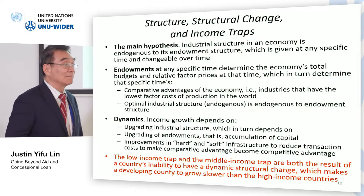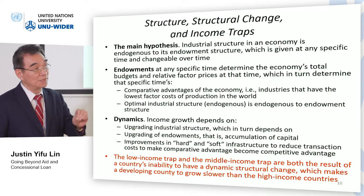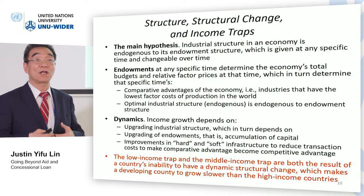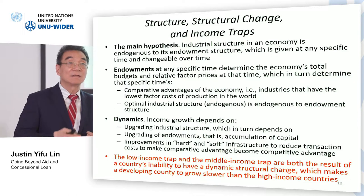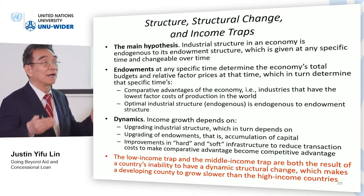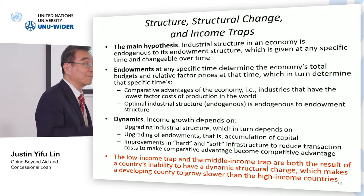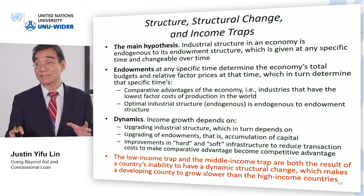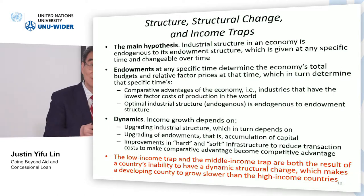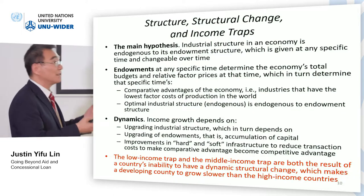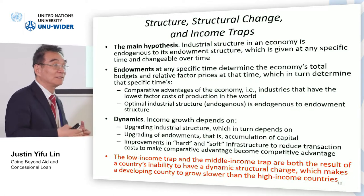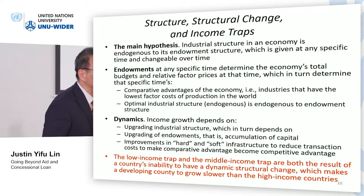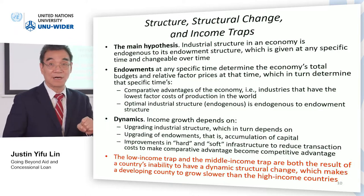The main idea is that economic structure — including technology, industry, institutions and so on — is endogenous to the endowment and its structure. By endowment I mean labor, natural resources, and capital available in any country at any time. Endowment is the total budget of a country at any specific time. If you are abundant in labor, wages will be low; if you are abundant in capital, capital will be relatively inexpensive. These relative prices determine the competitive advantage of an economy at any specific time.